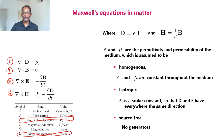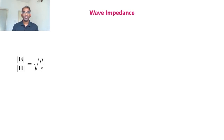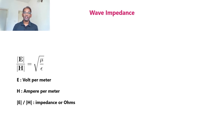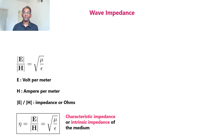My intention was to introduce the entity H, which we require to explain wave impedance. When electromagnetic waves propagate through a medium, the impedance offered by the medium is given by the modulus of E divided by the modulus of H, which equals the square root of mu divided by epsilon. E is expressed in volt per meter and H in ampere per meter, so their ratio has dimensions of ohms. This quantity is known as impedance or wave impedance, denoted by eta: eta equals |E|/|H| equals the square root of mu divided by epsilon, known as the characteristic or intrinsic impedance of the medium.